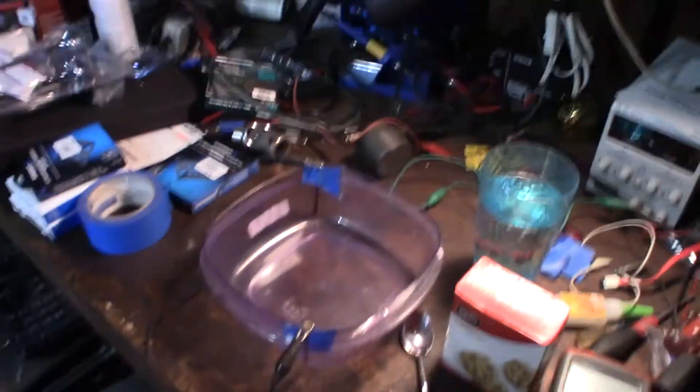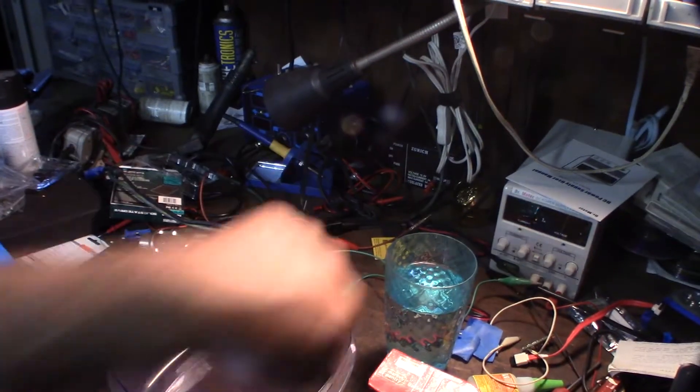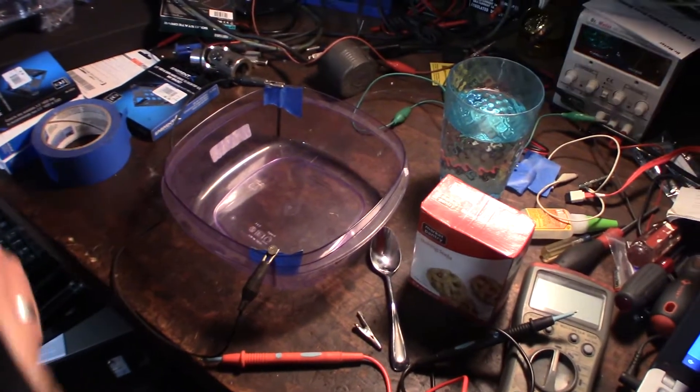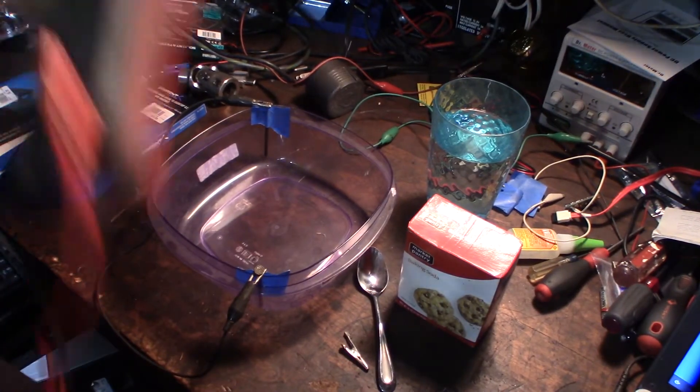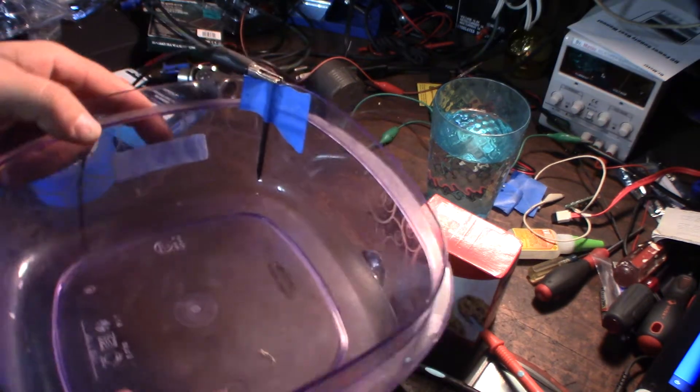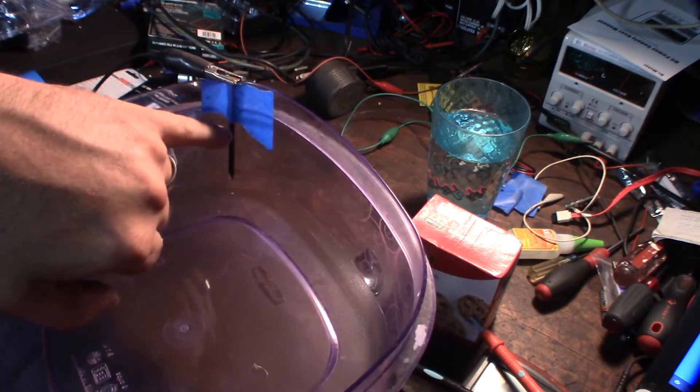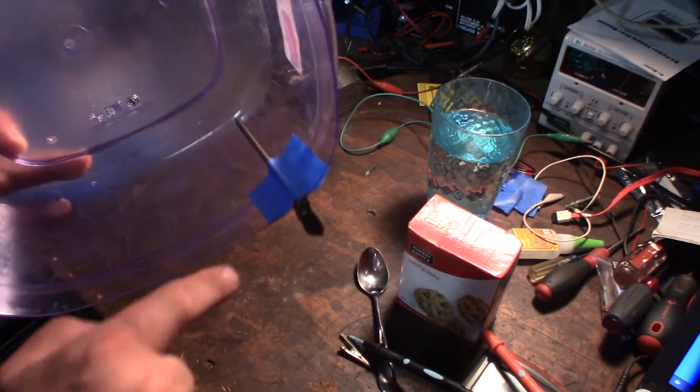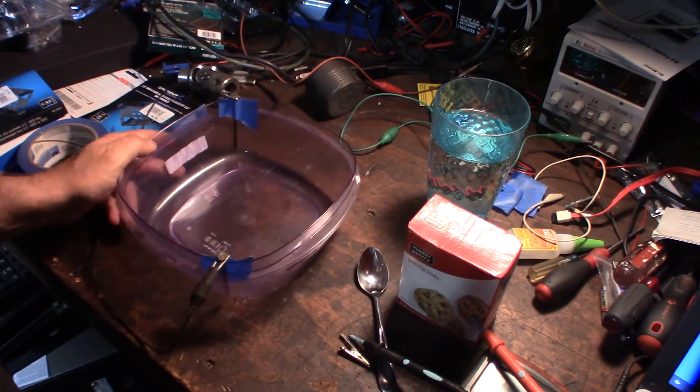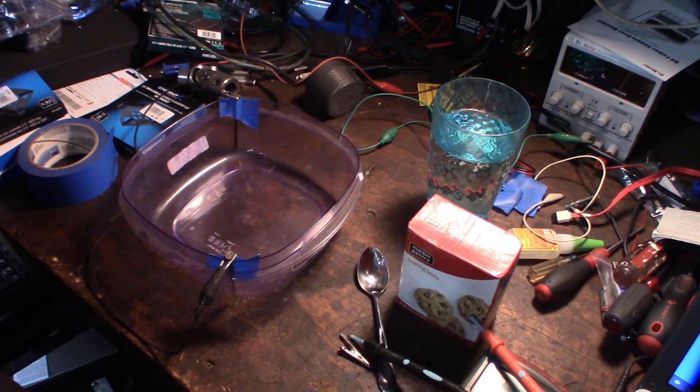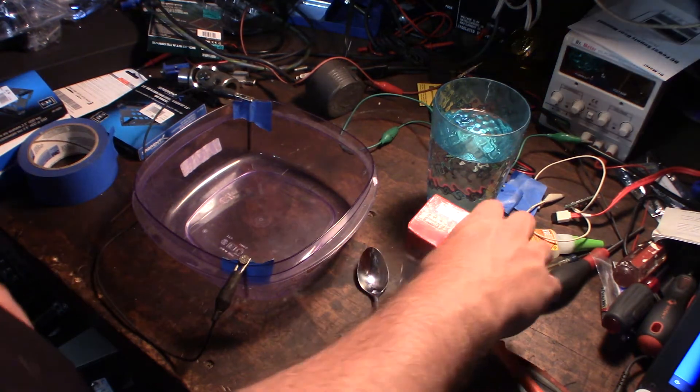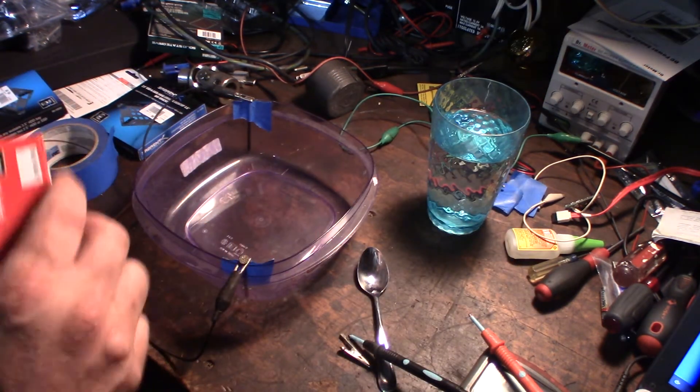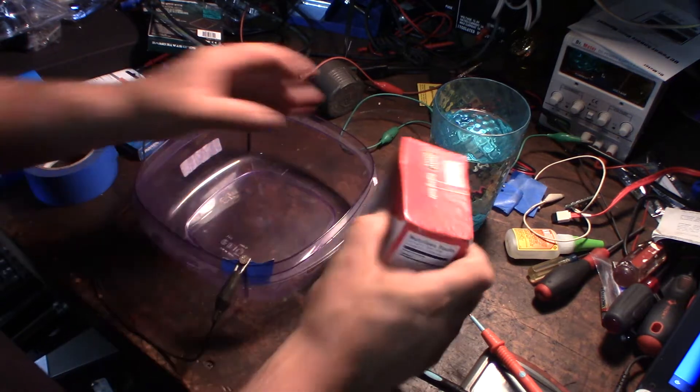But let me show you real quick. So these nails that are connected to this little pot here are going to collect the rust, hopefully. Then I'll add a little bit of water to this thing and baking soda. I don't know the exact amount, but I want to see if this actually works. I'm going to see if I can get this rust off. So first I'm going to add a little bit of water.